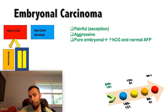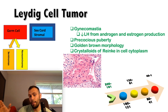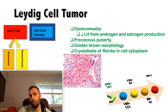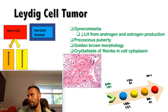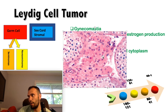The Leydig cell tumor is a sex cord stromal tumor—generally rare and benign. It tends to occur in late teens or early 20s. If it occurs in a young boy, it can cause precocious puberty due to androgen production; androgen and estrogen from the tumor also exert negative feedback on luteinizing hormone, causing decreased LH levels. The gross morphology has a golden brown appearance, and the key histological finding is Reinke crystalloids—red, cylinder-shaped structures that are diagnostic of Leydig cell tumor.